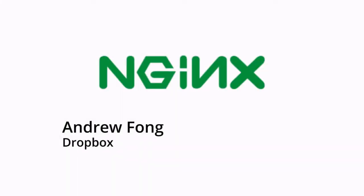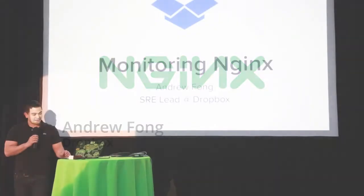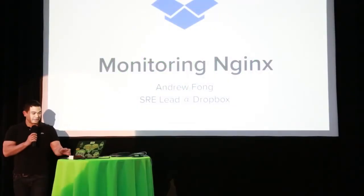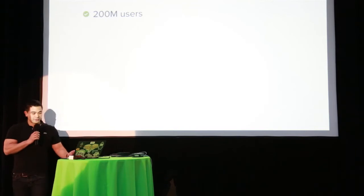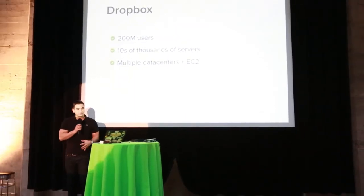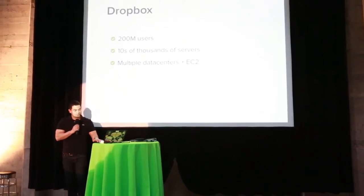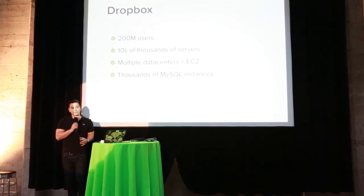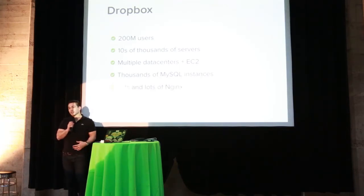I'm Andrew, the SRE lead at Dropbox, and we're going to talk about monitoring Nginx. Dropbox has over 200 million users and tens of thousands of machines, split roughly 50-50 between Amazon and our own data centers. We run thousands of MySQL master instances — thousands and thousands of MySQL servers alone — and we run lots of Nginx, both in EC2 and in our own data centers.